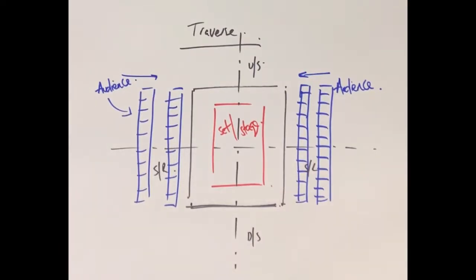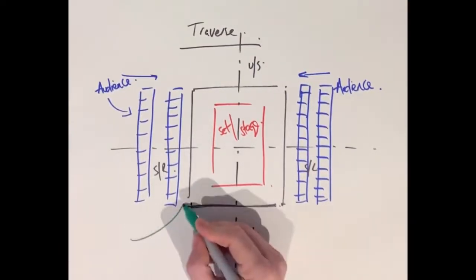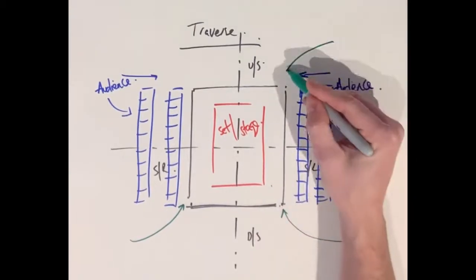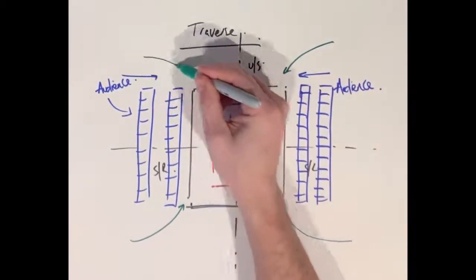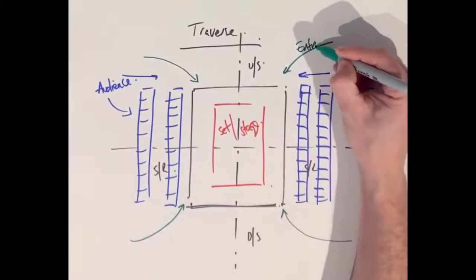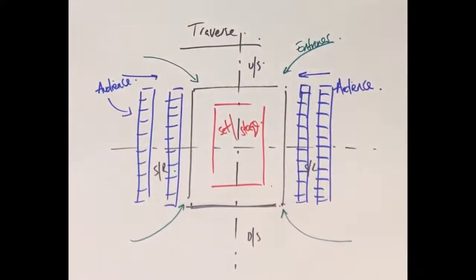With the green pen I'm adding in entrances and potential exits that I can use for this stage layout. Remember with traverse you can have pieces of scenery on the upstage face and the downstage face. And that is a traverse stage layout.